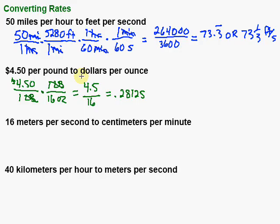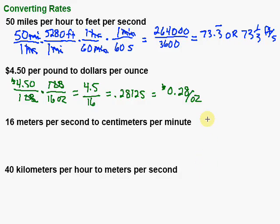Now my label is going to be dollars per ounce — perfect. Multiplying across: 4.50 over 16. Doing that division gives us 0.28125. That's dollars, so that would be 28 cents. Rounding to the nearest cent — since we're working with money — the digit after 8 is 1, so we drop it off. It's 28 cents per ounce.